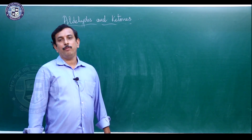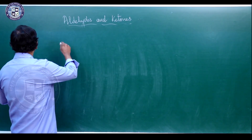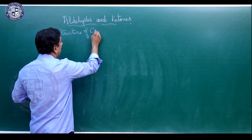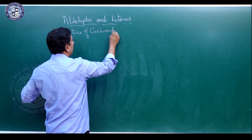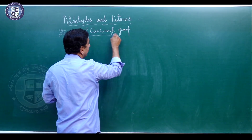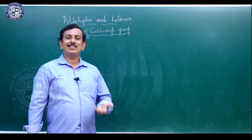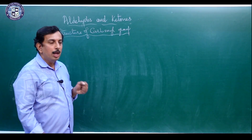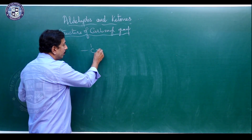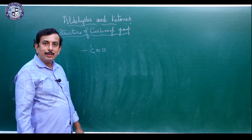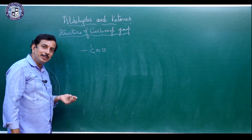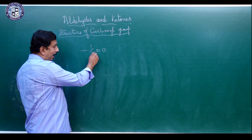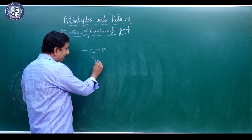Once you study about nomenclature, the next part is regarding the structure of carbonyl group. In the carbonyl group, carbon has a tetravalency — four bonds around it — out of which two valencies are satisfied with oxygen. The hybrid state of carbon in the carbonyl group is SP2.